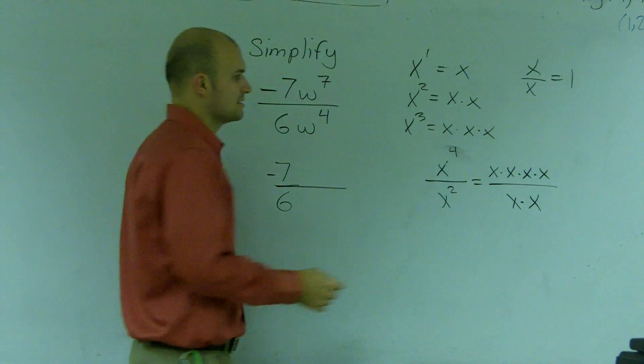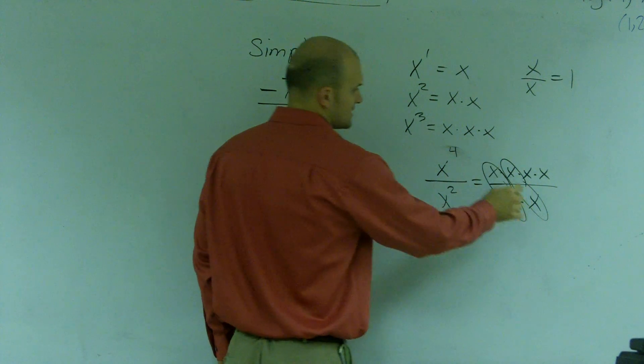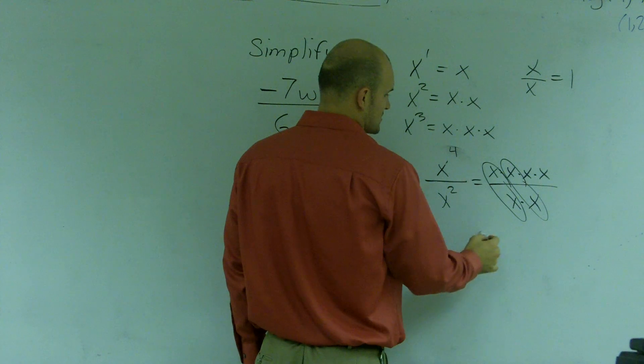Well, what happens is these two cancel out to 1. And we're just left with x times x, which is equal to x squared.